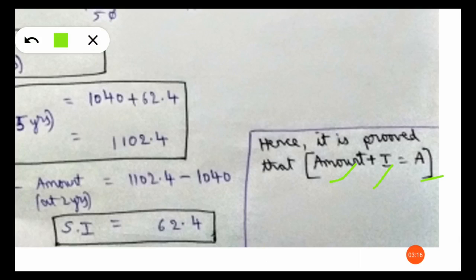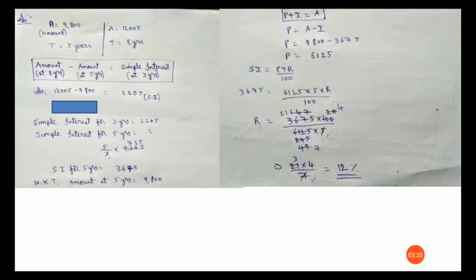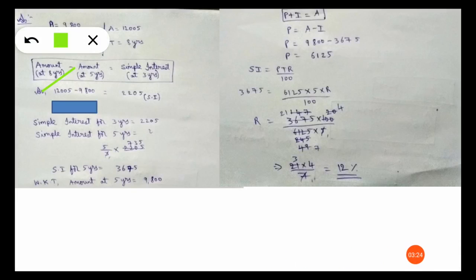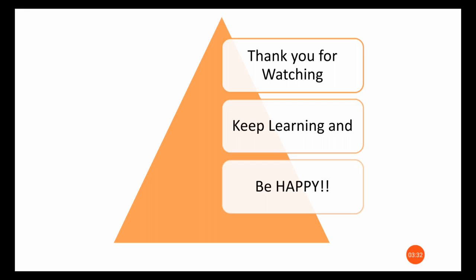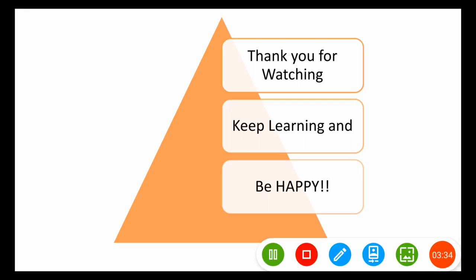So I hope you have understood the logic behind this. Amount at eight years minus amount at five years equals simple interest at three years — that is what we discussed. Thank you for watching, keep learning and be happy.